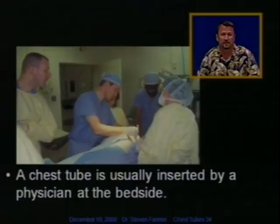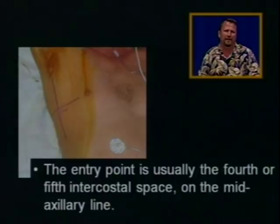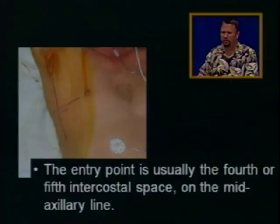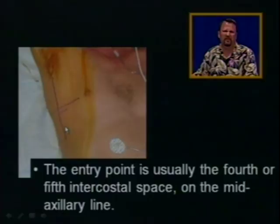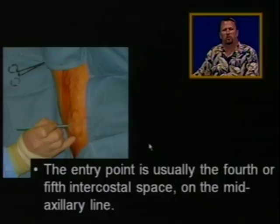A chest tube is usually inserted by a physician at the bedside. The entry point for a chest tube is the fourth or fifth intercostal space on the mid-axillary line — the mid-axillary line runs under your axilla, your armpit. Here's a picture of the surgeon drawing his entry point for a chest tube in that area. This is a sterile procedure, so once the site is prepped and draped, the procedure begins.